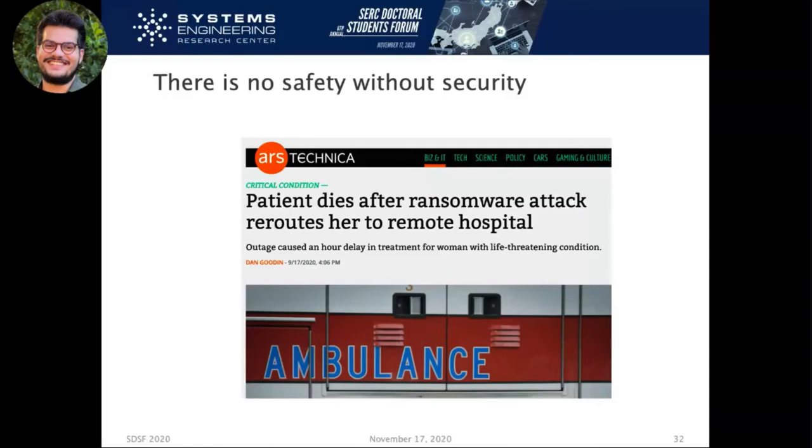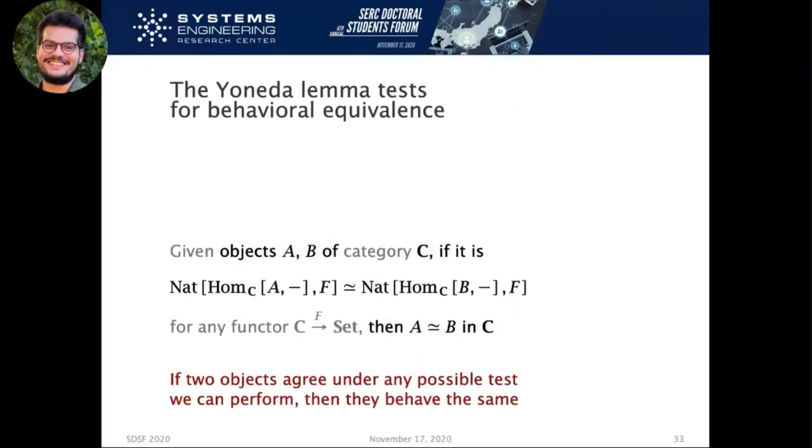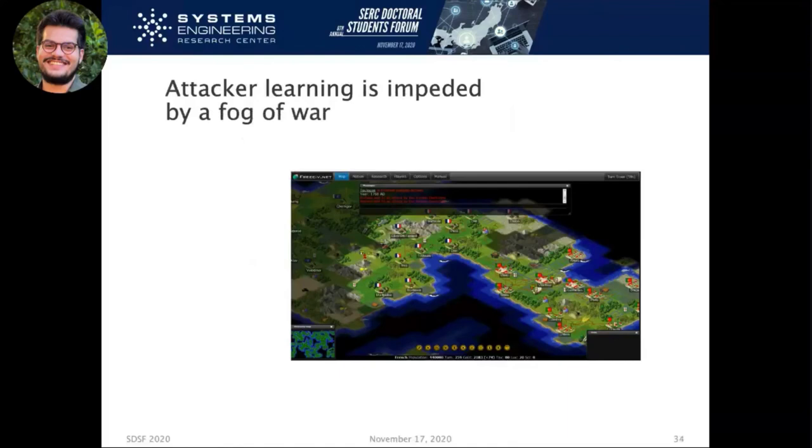Category theory provides another tool, probably the most important result of category theory, which is the Yoneda Lemma. And Nat here means natural transformation. Hom just means form morphisms. But what that really means is that in our context, if two objects agree at any given test, then they kind of behave the same. And the way I mean that is that even if you make a mistake, even if an attacker is probing the system with a tool like Nmap or something like that, and they don't find that you have two IMUs, but you have one IMU and one GPS, I would consider these two equivalent behaviorally in the sense that if you attack something in the system that's already there, it's still going to misbehave in a particular way. And that's the formal way of capturing this, but it's also the formal way of capturing this fog of war that attackers deal with.